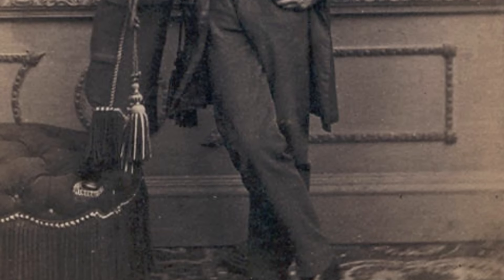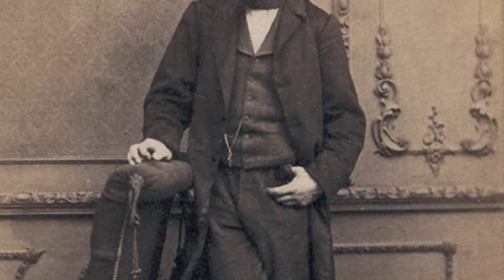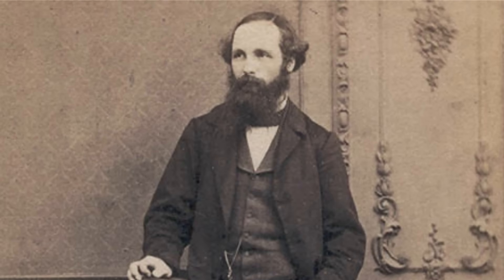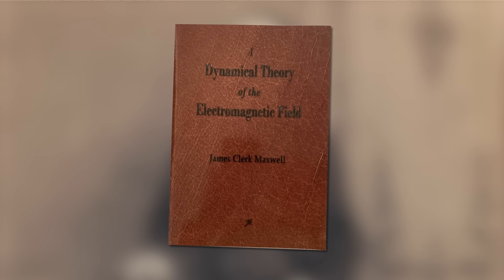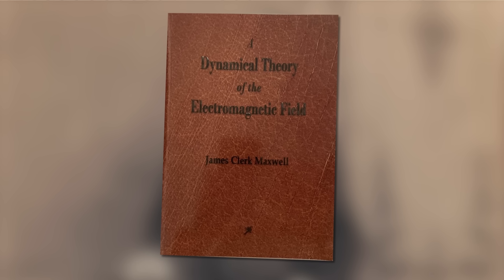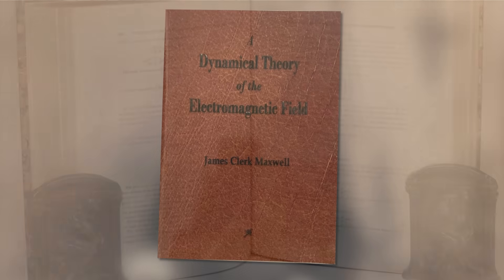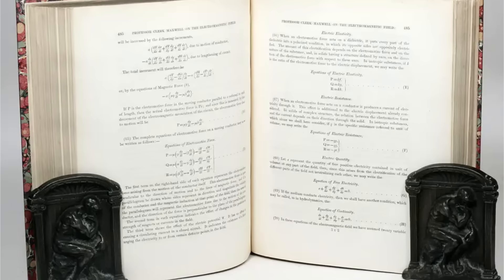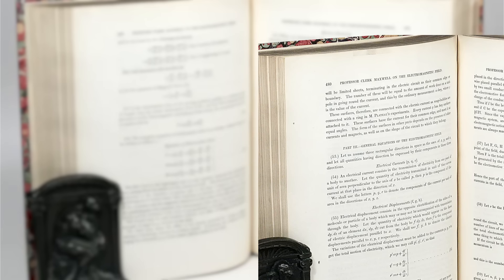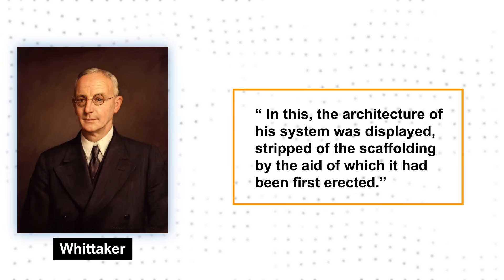While Maxwell was greatly inspired by these mechanical models, over the years, he slowly started losing confidence in them. Finally, in 1865, at the age of 34, he presented a monumental paper titled A Dynamical Theory of the Electromagnetic Field, where he retreated from all the specifics of the Molecular Vortices Model. Instead, he presented the whole theory on a much more abstract basis without any special assumptions. Science historian Whittaker writes about this as follows. In this, the architecture of his system was displayed, stripped of the scaffolding by the aid of which it had been first erected.